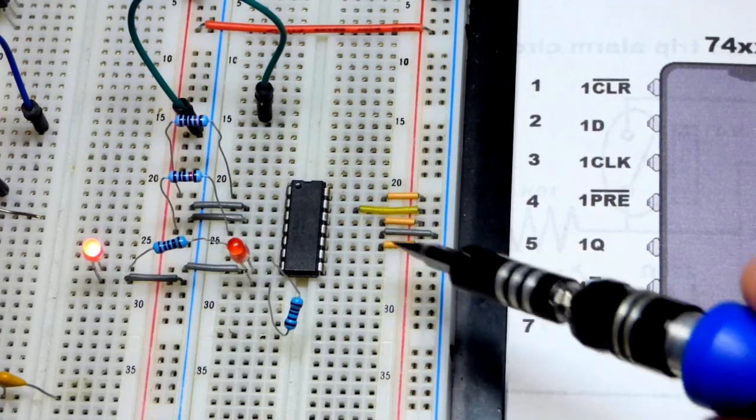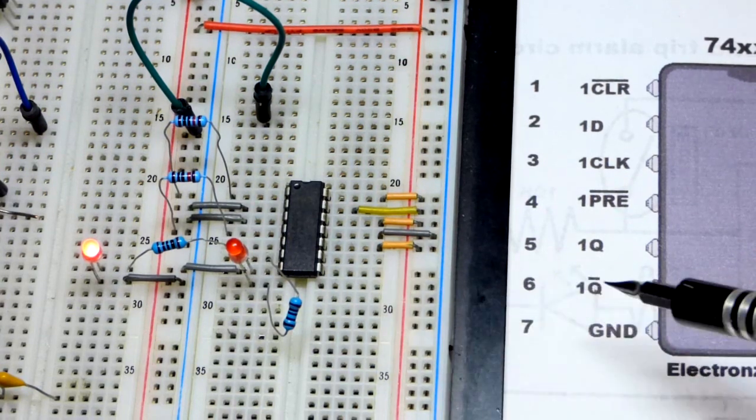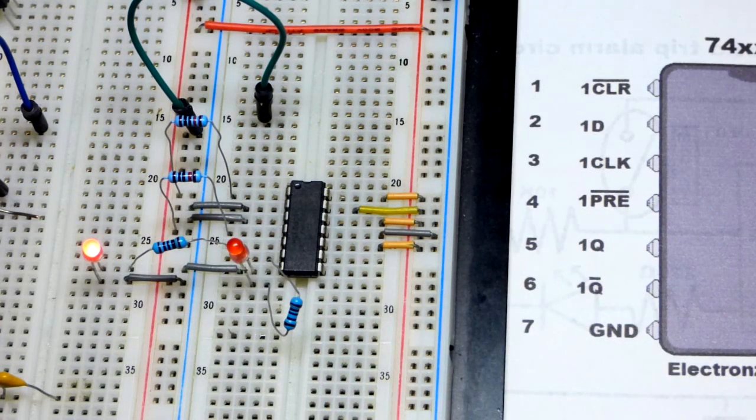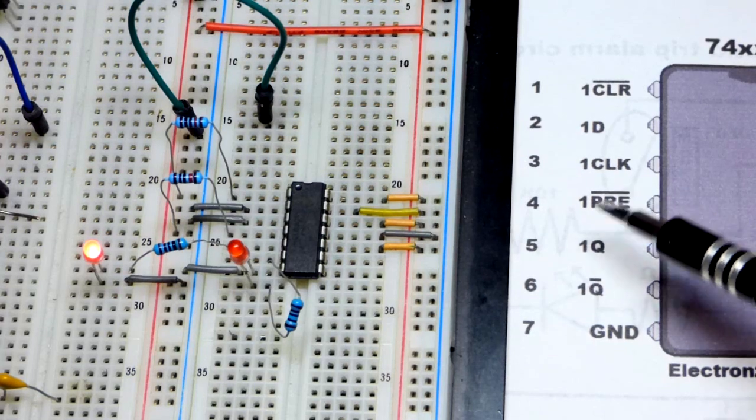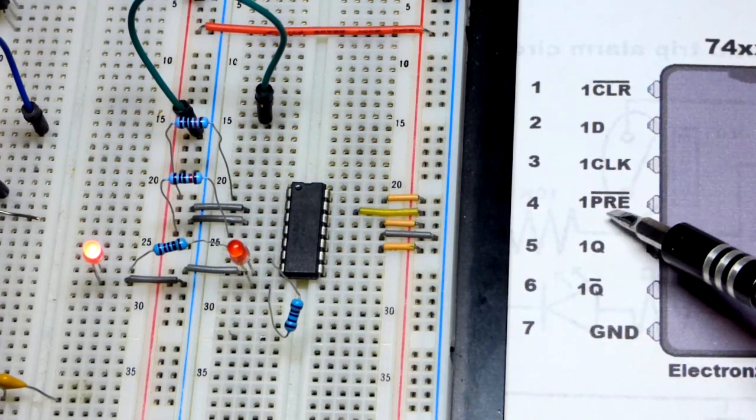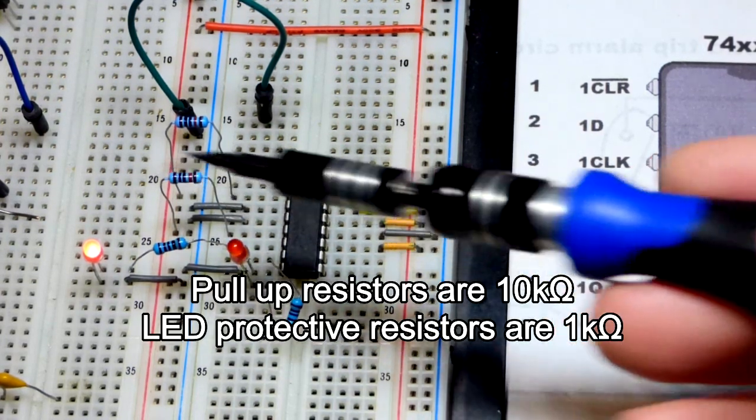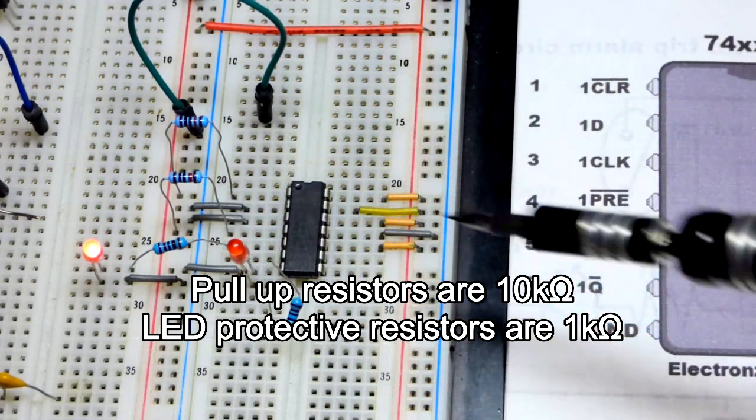I almost forgot to mention you got to tie the inputs to something but the outputs can stay floating, that's no problem. We're going to use both outputs though for our circuit on that side, for the set-reset flip-flop that we're going to make. We want to hold the preset pin high with a pull-up resistor and the clear pin high with a pull-up resistor.